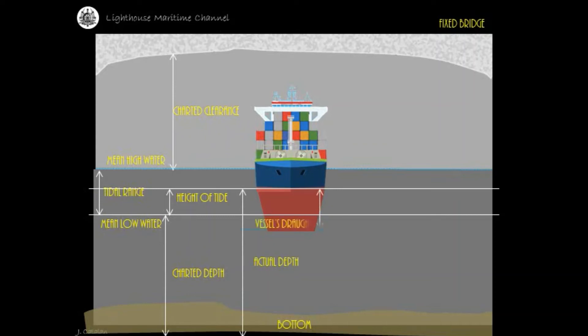Vessel's draft is measured from the waterline to the keel of the vessel. Under keel clearance is the difference between the actual depth of the water and the vessel's draft.